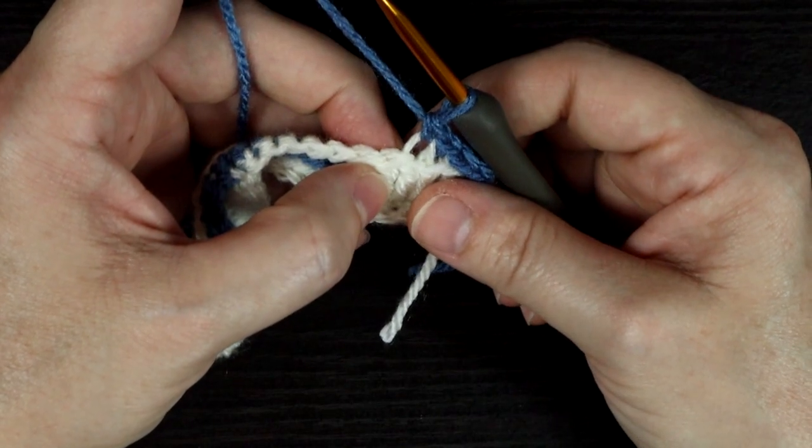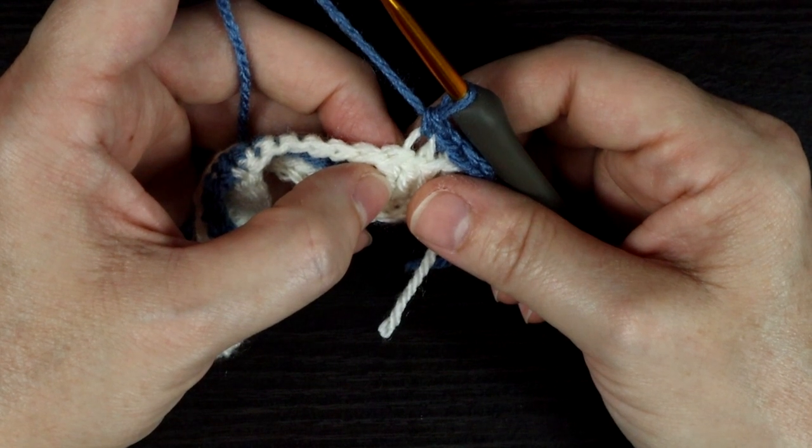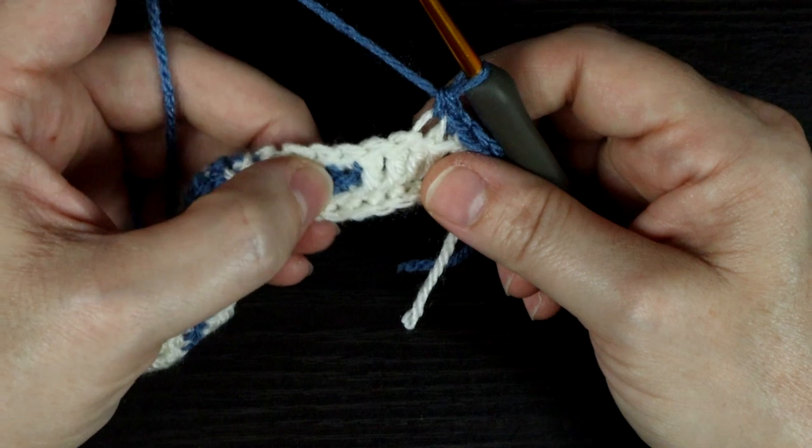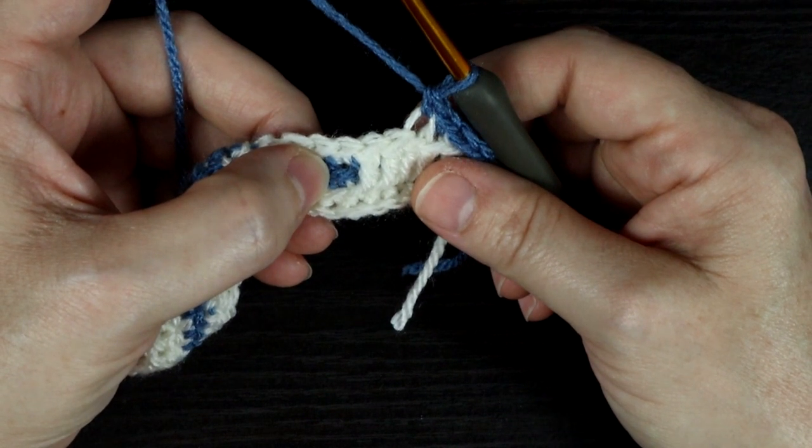Here I will be working the grouping of all three stitches into the same loop. Here's the stitch we're at. Count over two to the left and here's the loop I will work all three stitches into.